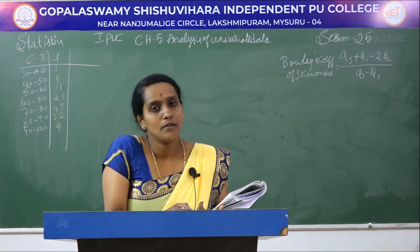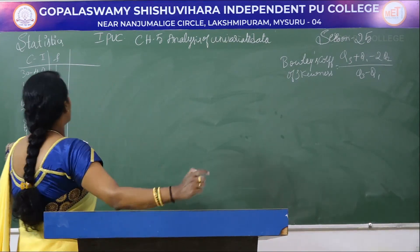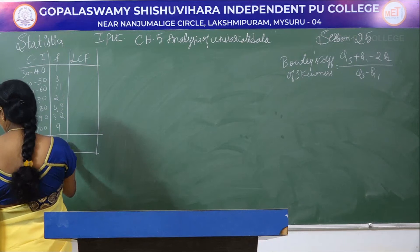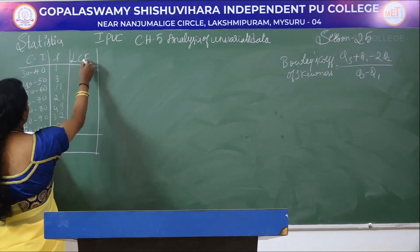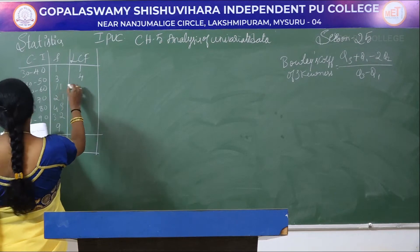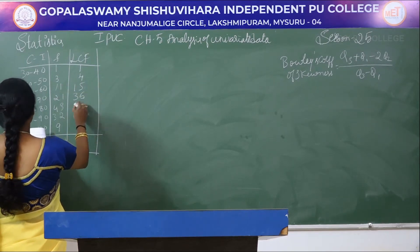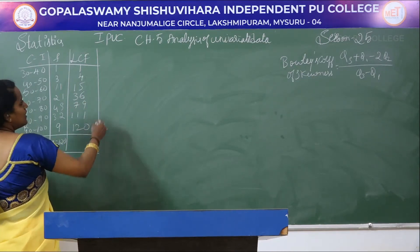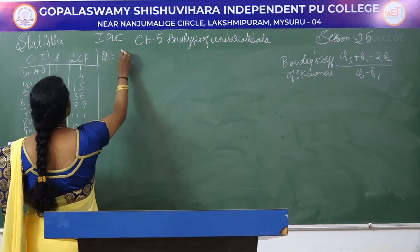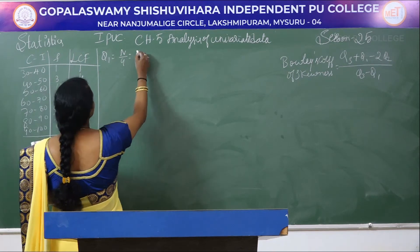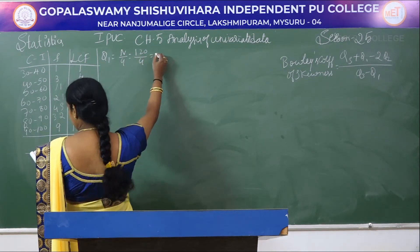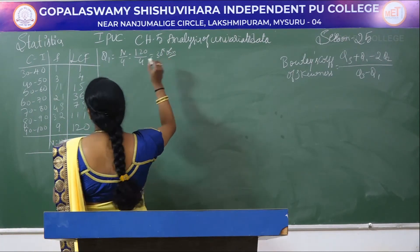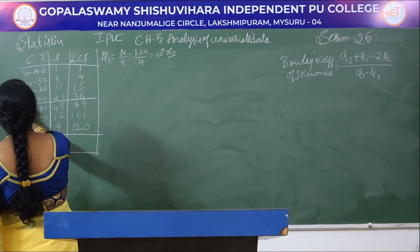Later we will solve the Bowley's coefficient formula. The first step is to calculate the less than cumulative frequency (LCF). N is equal to 120. The LCF values are: 1, 4, 15, 36, 79, 111, 120. Q1 is N by 4, which is 120 by 4 = 30th observation. The 30th observation falls in the LCF value of 36, so we block that class interval.